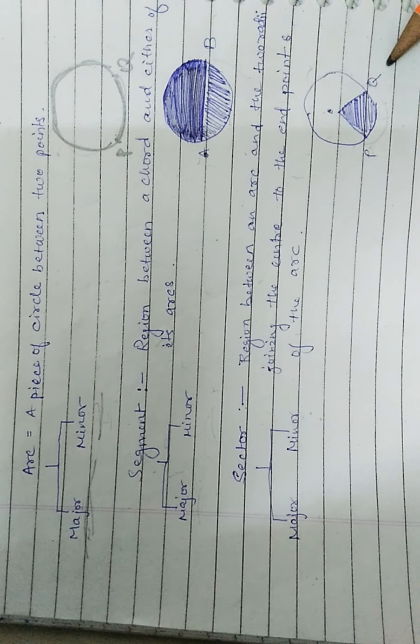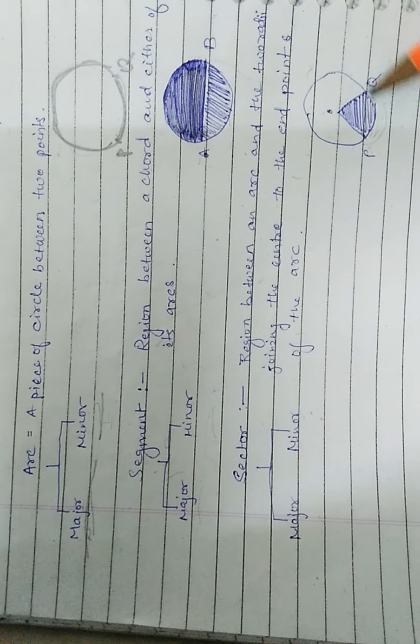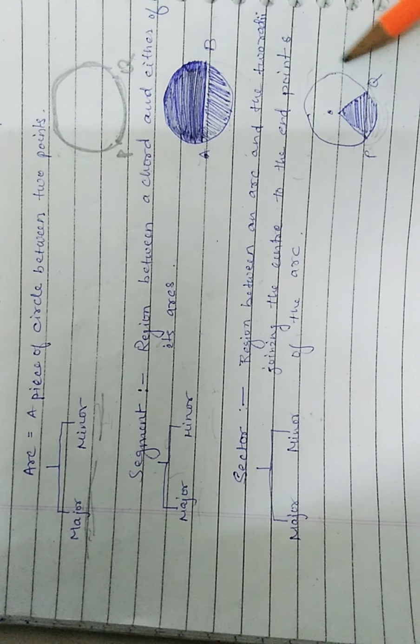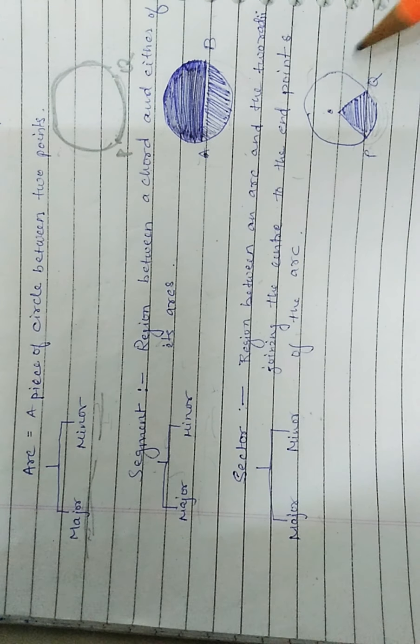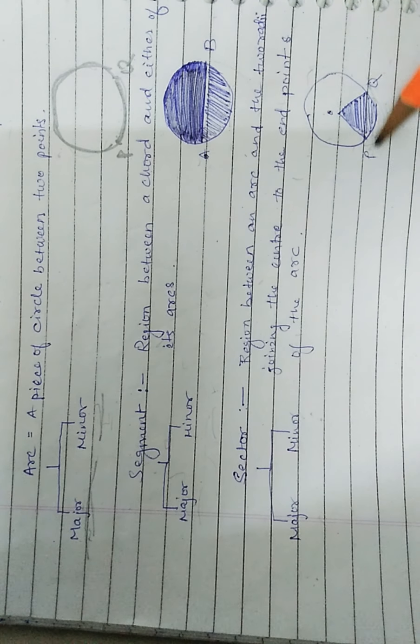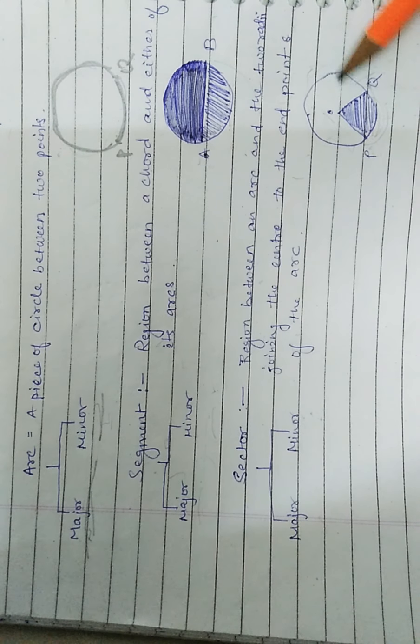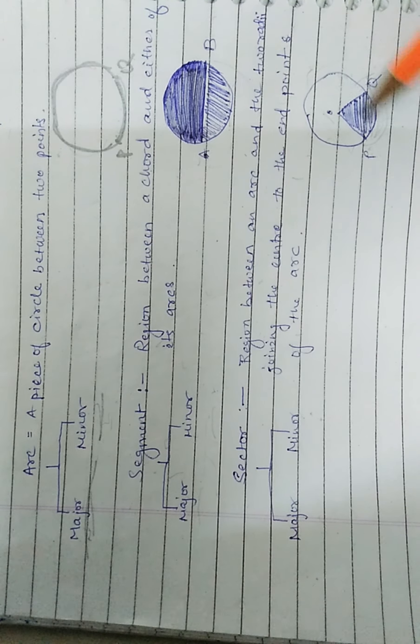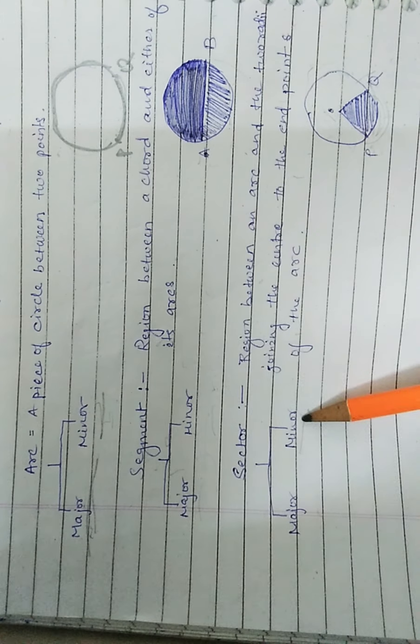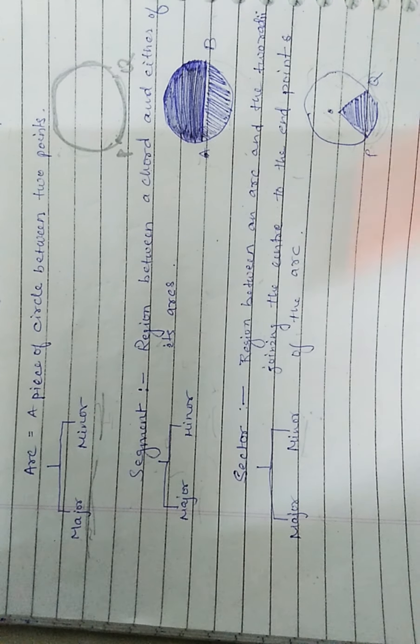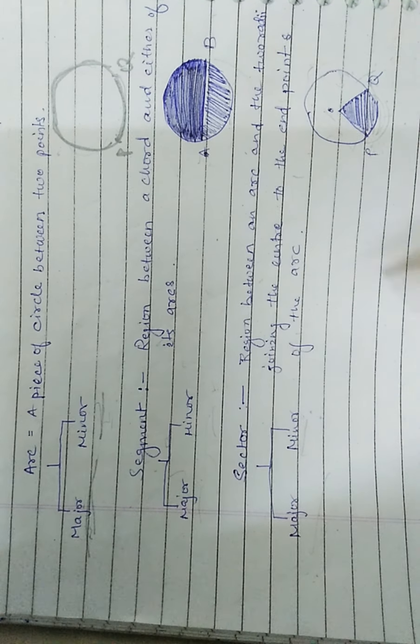PQ is the smaller arc and this PQ is the larger arc. PO and OQ are the two radii. This region and this region are known as sectors. The smaller one is the minor sector and the larger one is the major sector.